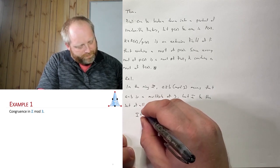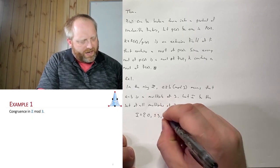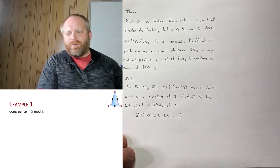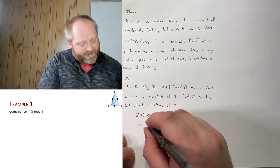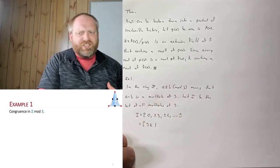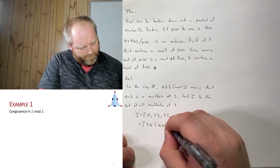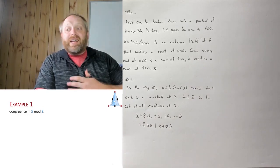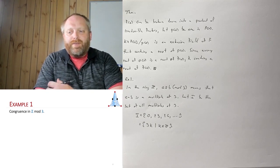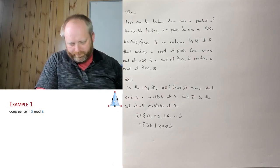So I is going to look as follows. We're looking at all multiples, so 0 is going to be in there, plus and minus 3, plus and minus 6, and so on. We can also rewrite this as the set of 3 times K, where K is an element of Z. So we've created a set I — it is a subset of Z, but it strictly contains all multiples of 3.